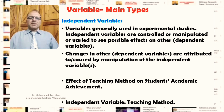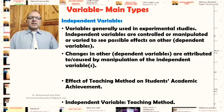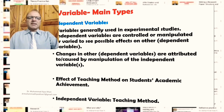For example, in the effect of teaching methods on students' academic achievement, the teaching method can be taken as the independent variable and academic achievement as the dependent variable. The manipulation or change in the independent variable — the teaching method — might have consequences or an effect on the dependent variable in terms of students' academic achievement.